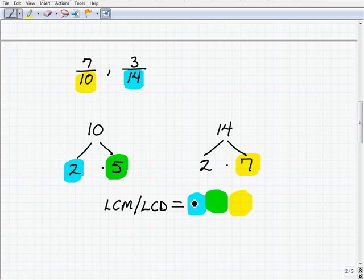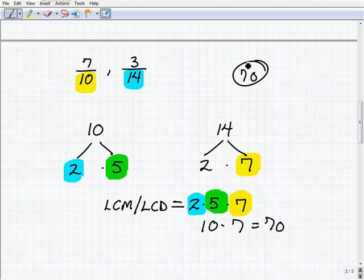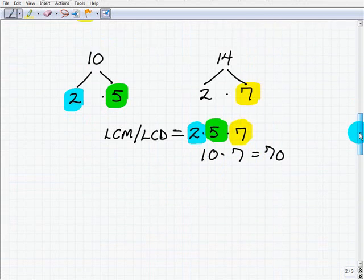All right, so let's go and write those in. Two times five times seven, or ten times seven is 70. Okay, so 70 is the lowest number that both 10 and 14 divide into. So 70 is our LCD. Okay, let's move on.